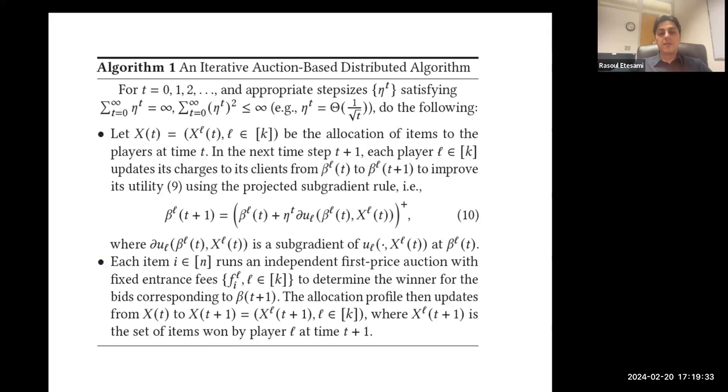We also provide an auction-based distributed algorithm where basically the agents sell their cache spaces, and the resources are the players who bid for these cache spaces. And we show that if these dynamics follow certain rules, then the system converges to some good optimal solution.